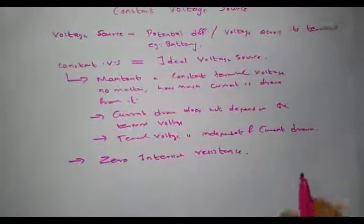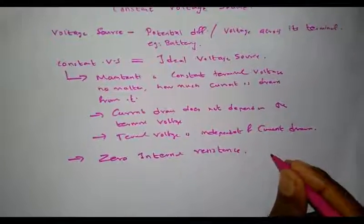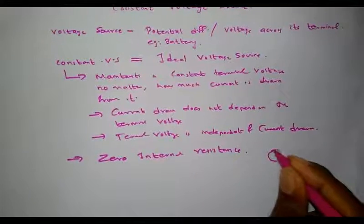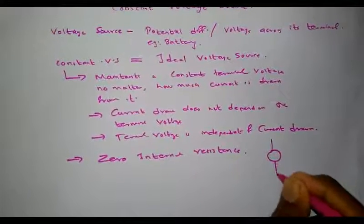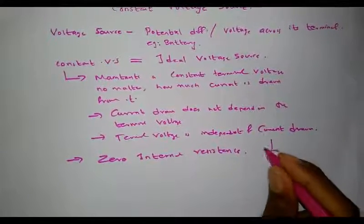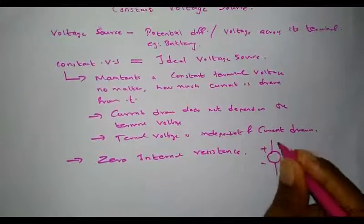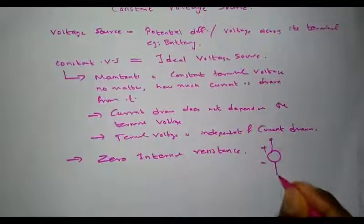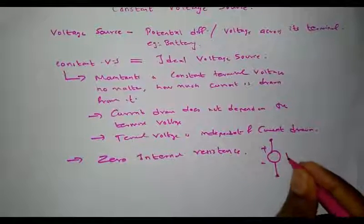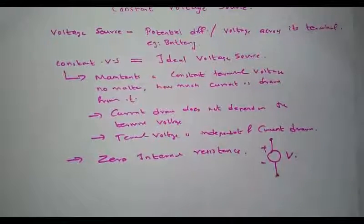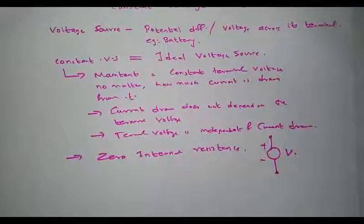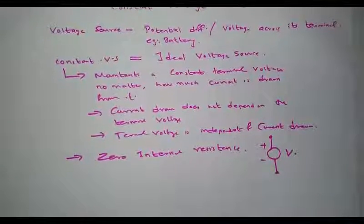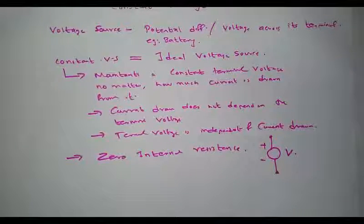A constant voltage source can be represented by the symbol with positive, negative terminals and E. This is an ideal concept.